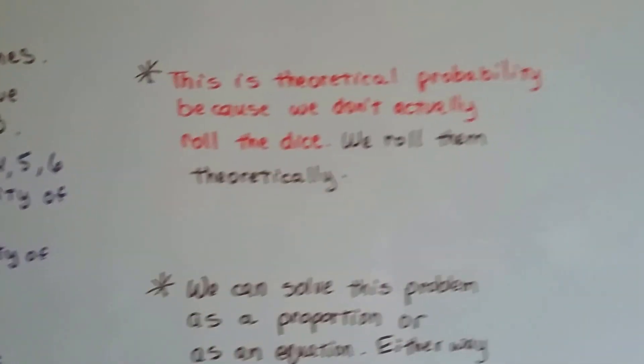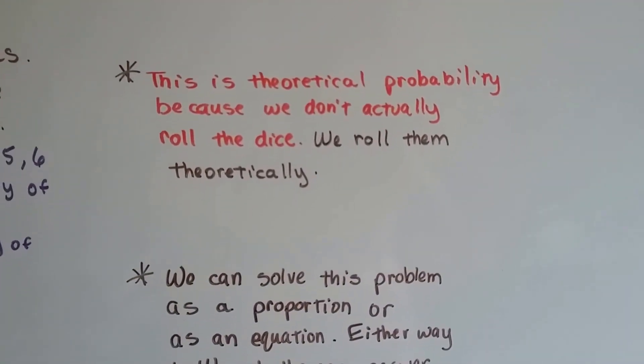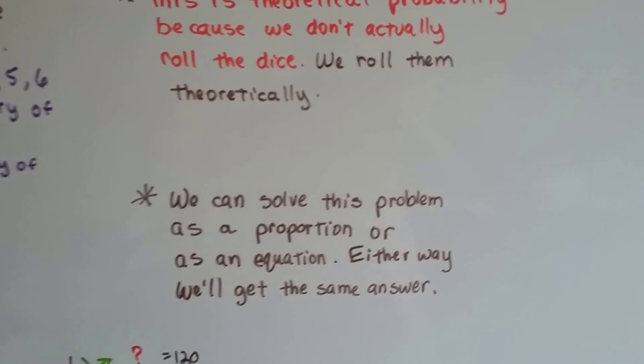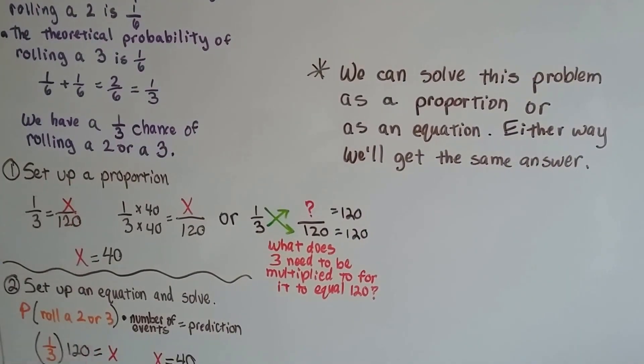So this is theoretical probability because we don't actually roll the dice, we roll them theoretically. And we can solve this problem as a proportion or as an equation. Either way, we'll get the same answer.